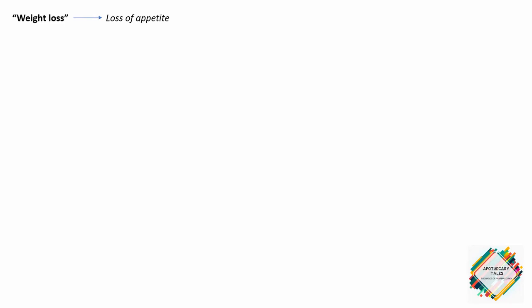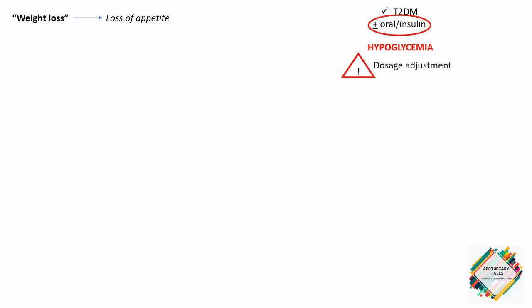The American Diabetes Association usually recommends metformin as the initial drug of choice for type 2 diabetes. Metformin may be used alone or in combination with other oral agents or insulin. Remember, hypoglycemia may occur when metformin is taken in combination with insulin or insulin secretagogues, so adjustment in dosage may be required.